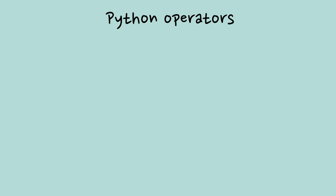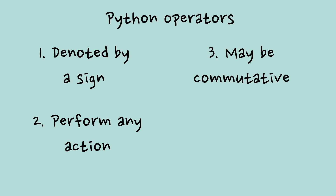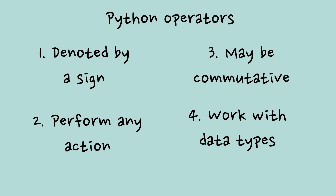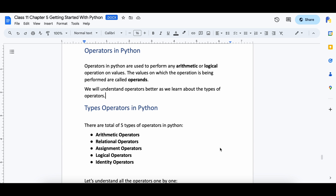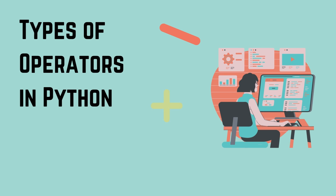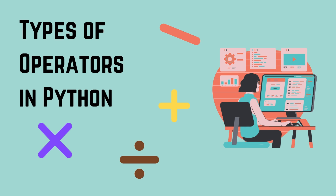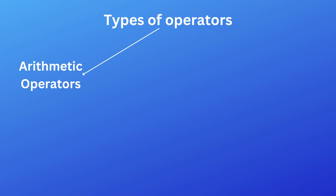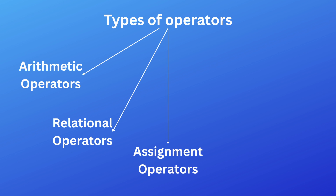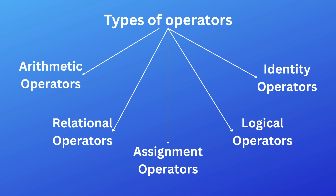Similarly, Python also has its own set of operators that are denoted by a sign, perform any action, may or may not be commutative, and may work with a variety of data types. So today we will start with understanding the operators within Python that are commonly used by programmers and developers to create logic. Operators can be divided into 5 types on the basis of the operation they perform: Arithmetic Operators, Relational Operators, Assignment Operators, Logical Operators, and Identity Operators.